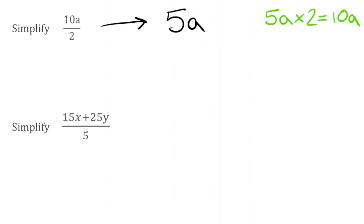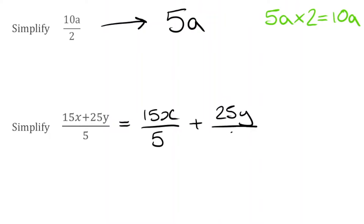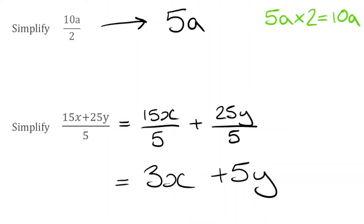For our next question, we have 15x plus 25y all divided by 5. We've got to take everything in the numerator and divide it by the denominator. We can write this out as individual fractions because we have a common denominator of 5. So this is the same as 15x divided by 5 plus 25y divided by 5. So 15 divided by 5 is 3, giving us 3x, and 25 divided by 5 is 5, giving us plus 5y.